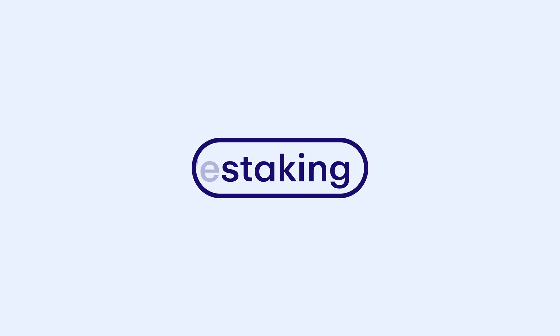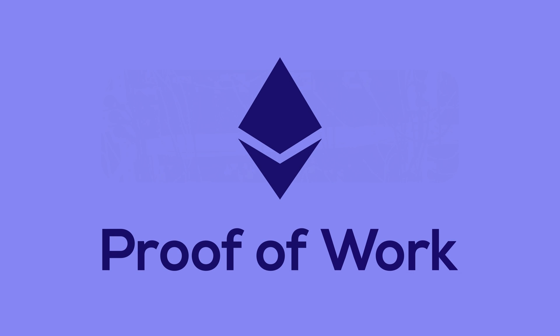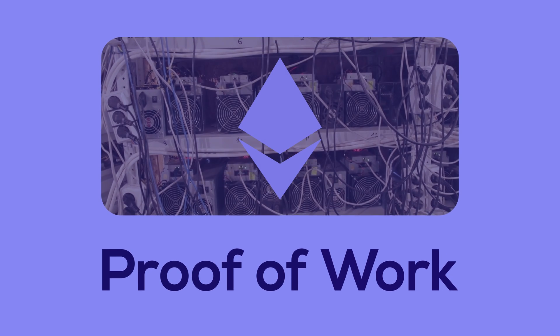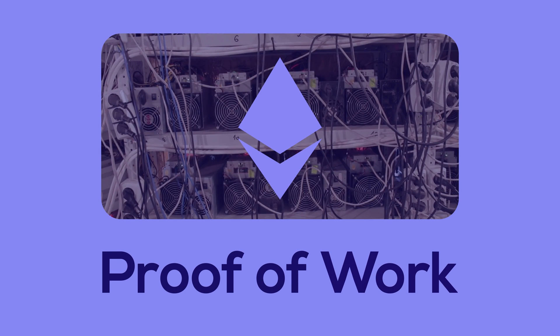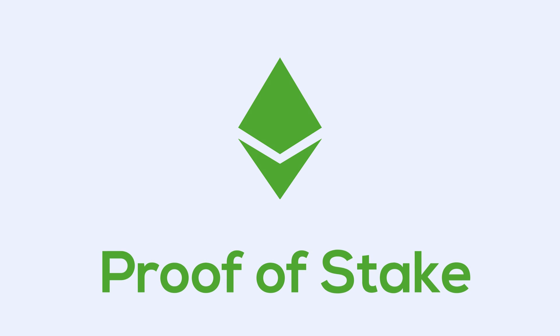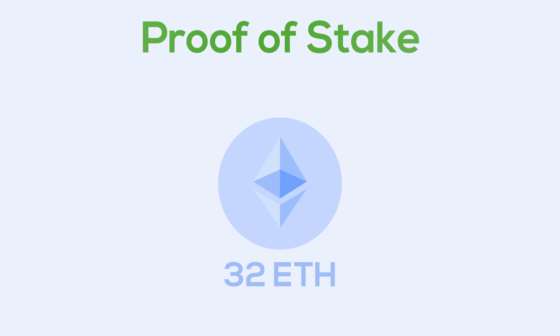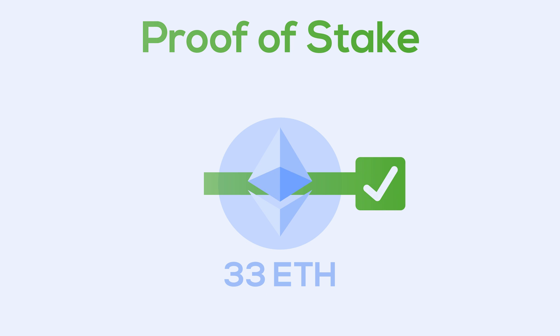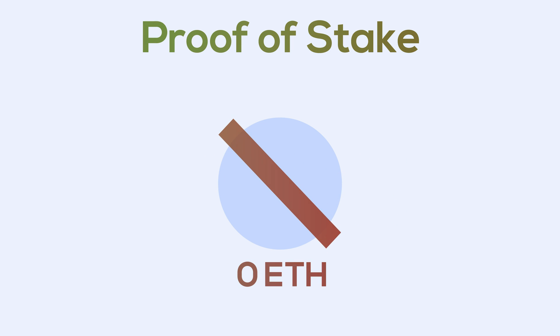Before we get to restaking, let's talk about staking. Previously, Ethereum used proof of work, which relied on computing power to secure the network. But somewhat recently, Ethereum upgraded to proof of stake. In this system, validators stake ETH to verify transactions. When you verify correctly, you earn more ETH. But if you don't, either as a mistake or maliciously, you have your stake slashed as a punishment.